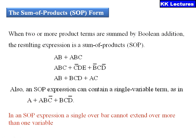In an SOP expression, a single over bar cannot extend over more than one variable; that means each and every variable should be either in complemented or uncomplemented format. In sum of products, the normal variable takes the value of 1 and a complemented variable takes the value of 0.